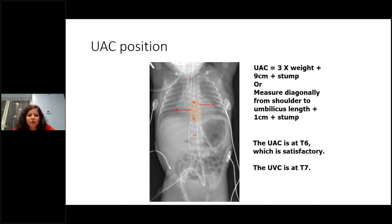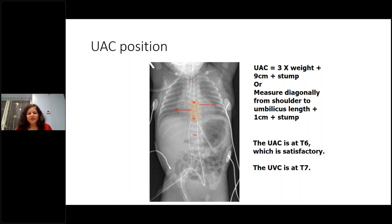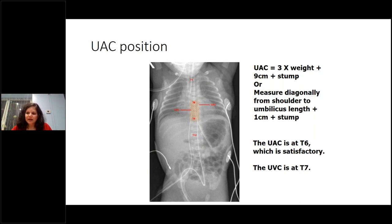The ideal UAC position is T6 to T9. The measurement most people use is on Neomate. If you don't have access to Neomate, the formula is three times the weight plus nine plus stump length. If you can't remember that, the easiest measurement is diagonally from the shoulder to the umbilicus.